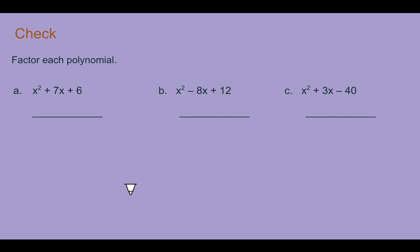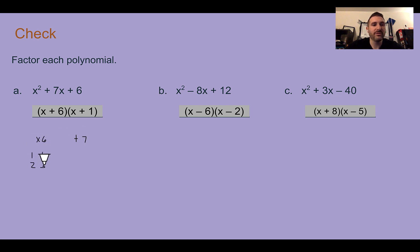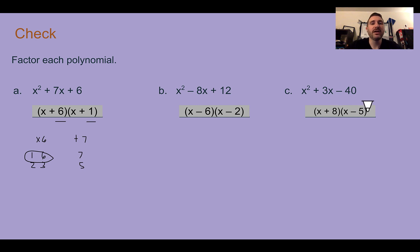Check your understanding: factor each polynomial. Answers: first, x plus 6 times x plus 1 — multiply to 6 and add to 7, so 1 and 6 work. Second, x minus 6 times x minus 2 — multiply to 12 and add to negative 8, so negative 6 and negative 2 work. Third, x plus 8 times x minus 5 — multiply to negative 40 and add to 3, so positive 8 and negative 5 work. Order of the binomials doesn't matter as long as you have the correct factors.